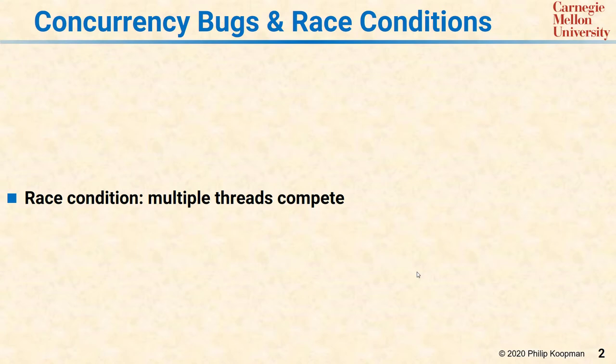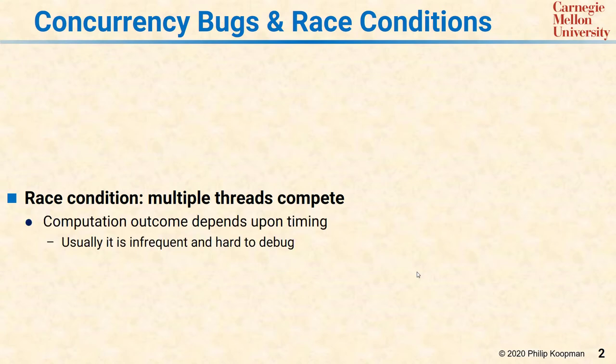Most commonly, the result of a race condition is a computation value that depends upon the timing of multiple threads of control running. Usually these types of bugs are infrequent and difficult to find because they happen only very rarely when particular timing things line up, and it's usually something you don't see in testing. But it will happen to you in the field if you have that kind of bug in your software.